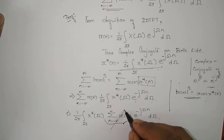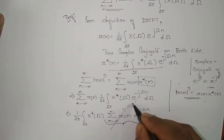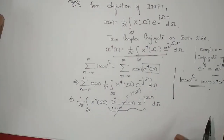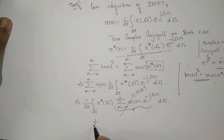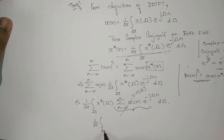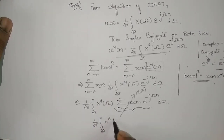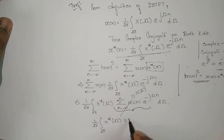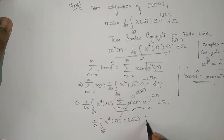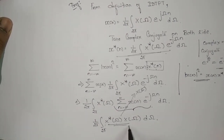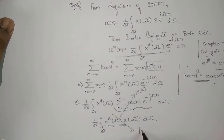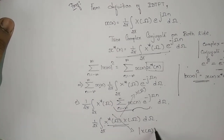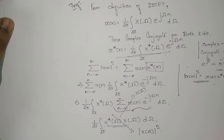From the definition of the DTFT, the inner summation is actually X(ω). So I can write this as 1 over 2π, integrating over 2π, of X*(ω) times X(ω) dω. And X*(ω) times X(ω) can be written as the magnitude squared of X(ω).